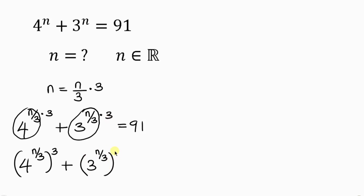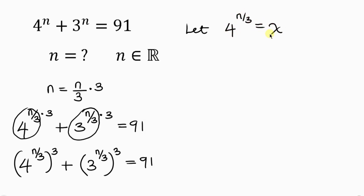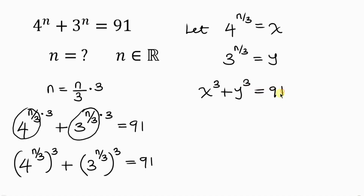Our next step is to introduce substitution. Let the term 4 to the power of n/3 be x, and let the term 3 to the power of n/3 be y. Rewriting the equation gives us x cubed plus y cubed equal to 91.